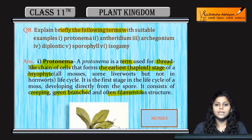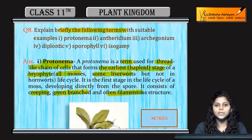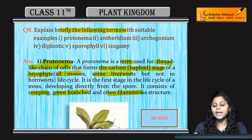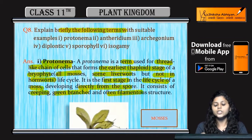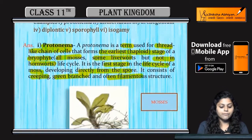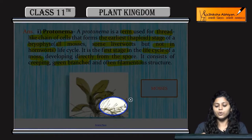Bryophytes include mosses, liverworts, and hornworts. The Protonema stage is present in all mosses, but only in some liverworts, and is absent in hornworts. It is the first stage of the life cycle of mosses, developing directly from spores. This thread-like structure is a Protonema.